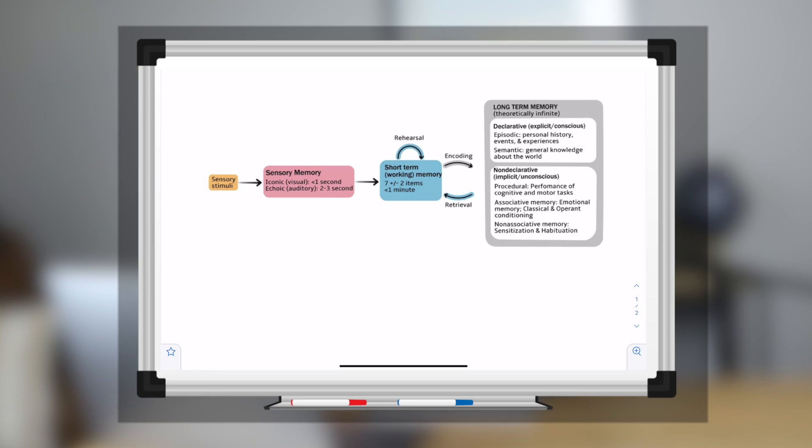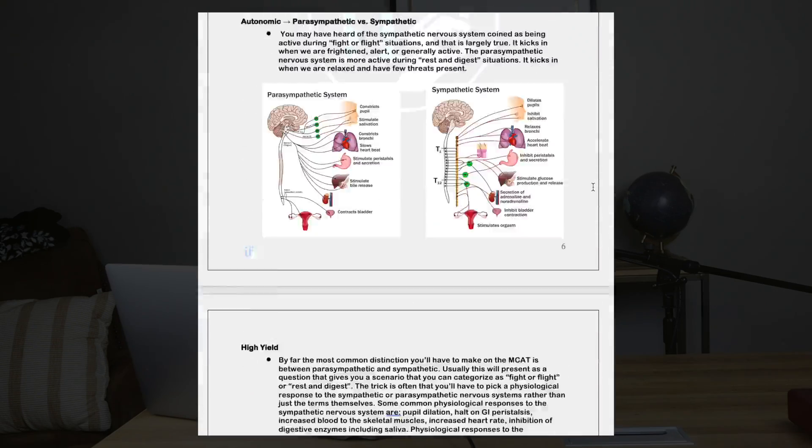So short-term, long-term, working memory, things like that. I'm going to show you a graphic that we include in our high-yield MCAT topic textbook. If you want to check that out, it'll be the first link in the description. And I'm going to teach from this graphic because it's really all you need to know.